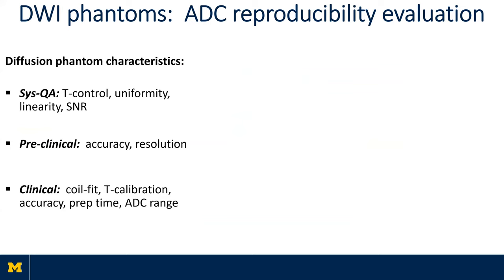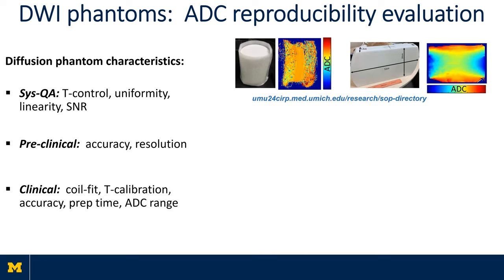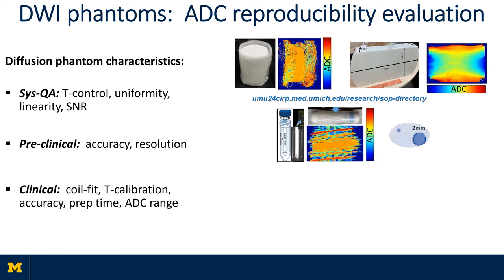Several physical ADC phantoms have been implemented and used to date for system QA, preclinical, and clinical studies. For system quality assurance in a research environment, ice water provides a viable option for temperature control, good SNR, and accurate ground truth value in the tissue-relevant range of 1.1 micron squared per millisecond, but it is limited usually to one-dimensional sampling because it is usually placed in a tube. Gel-based phantoms that prevent bulk fluid motion provide large real estate and allow testing uniformity with respect to ISO center, but have lower SNR due to T2 damping and absolute diffusivity dependent on scanner room temperature.